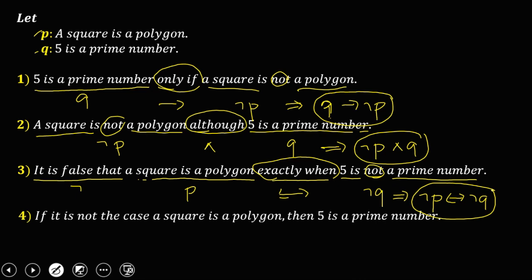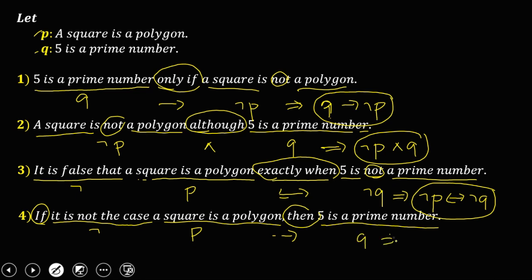For the last compound statement: 'if it is not the case a square is a polygon, then five is a prime number.' 'It is not the case a square is a polygon' is ¬p, 'if...then' is the conditional arrow (→), and 'five is a prime number' is q. So the symbolic form is ¬p → q. This is how to convert a compound statement into symbolic form.